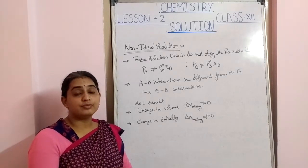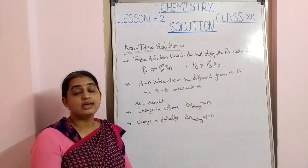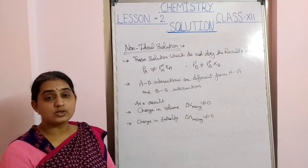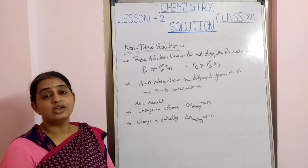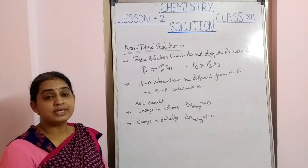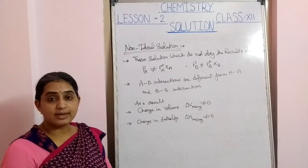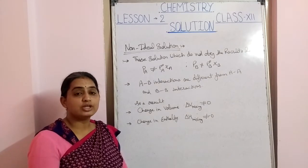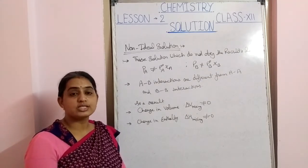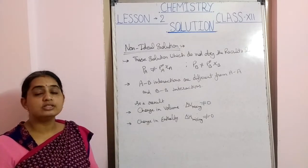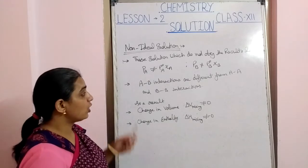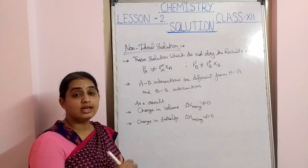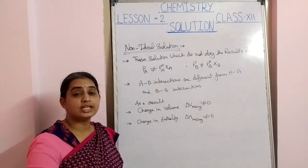We know that binary solutions of liquids are of two types: ideal and non-ideal. Ideal solutions are those which obey Raoult's Law, that is PA = P°A · XA and PB = P°B · XB, and total pressure P = PA + PB. In ideal solutions there is no change in volume and no change in enthalpy when mixing the two components A and B.